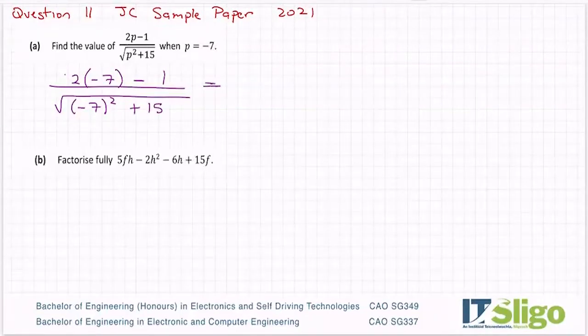I put into the calculators all in one go. Hit that fraction button and then I'm doing 2 bracket minus 7 minus 1. Hit down under the fraction line, hit the square root button bracket minus 7 squared plus 15. And I am getting minus 15 over 8 for that particular one.